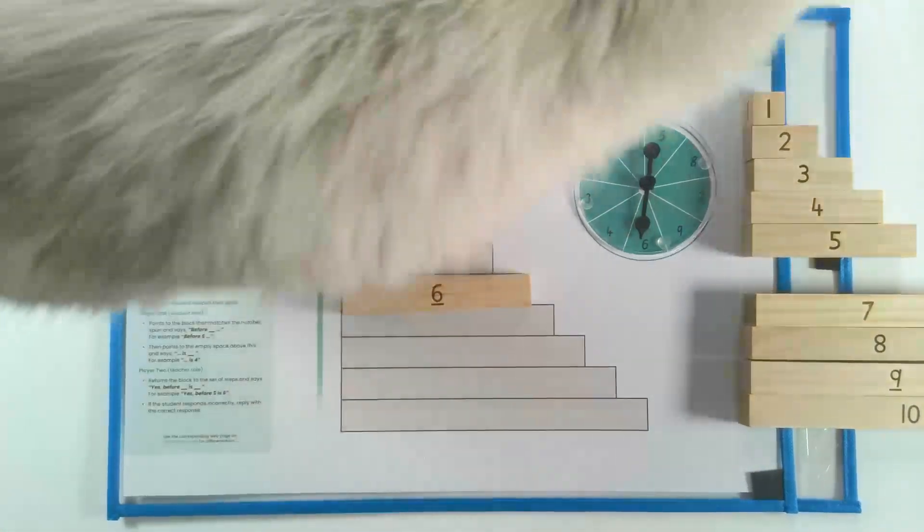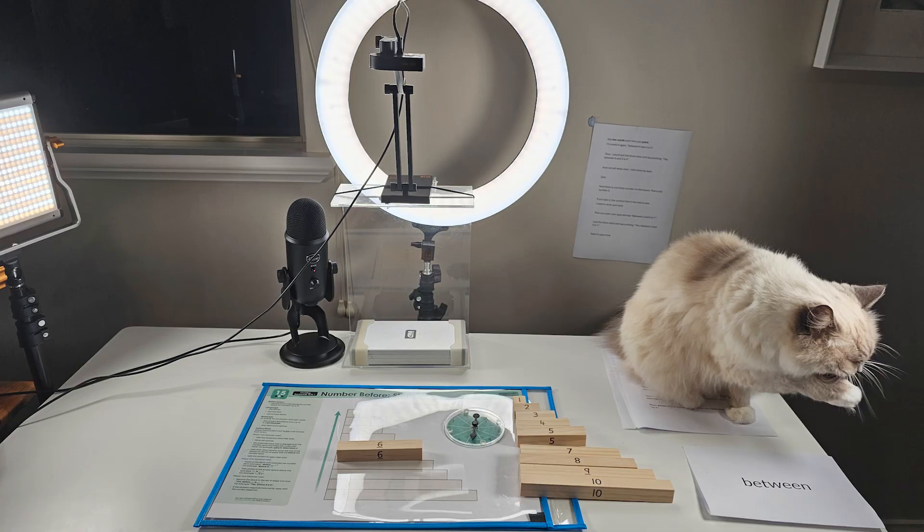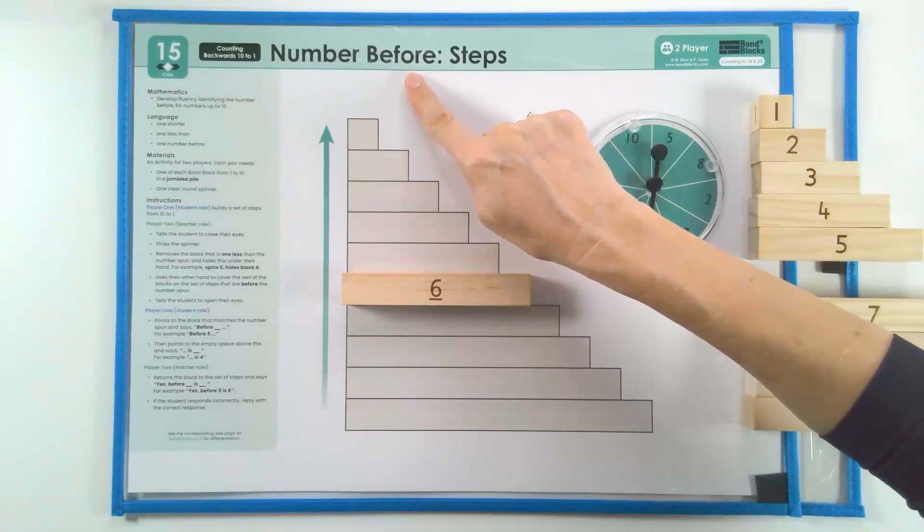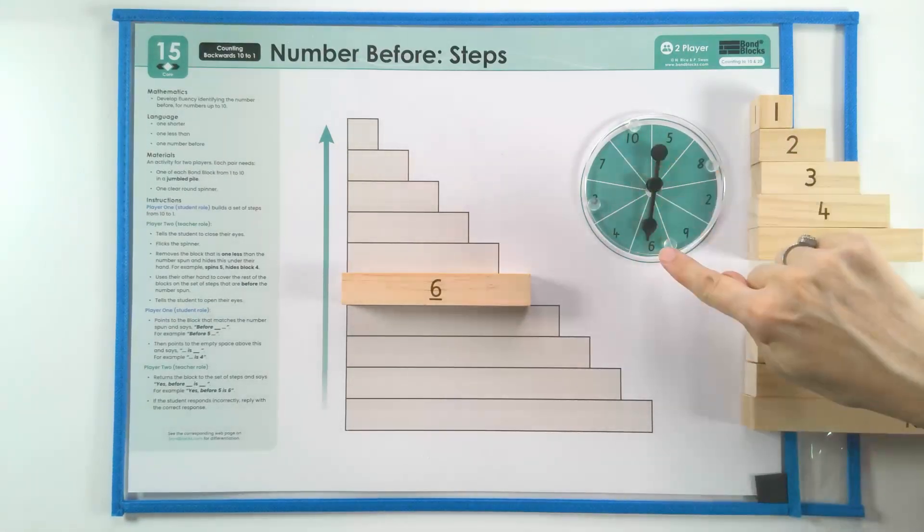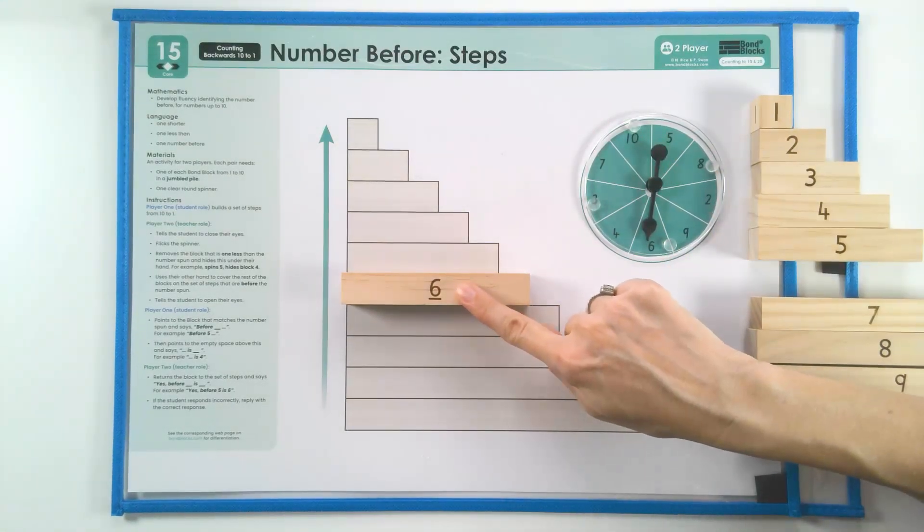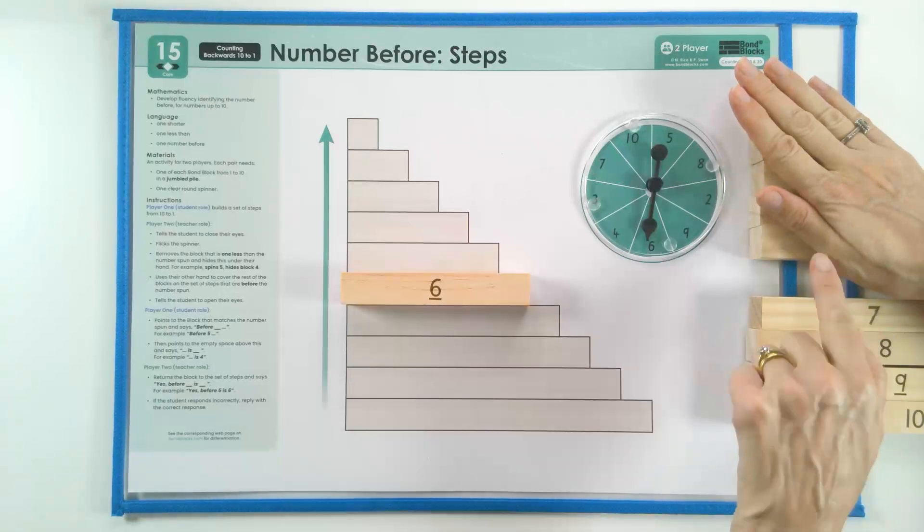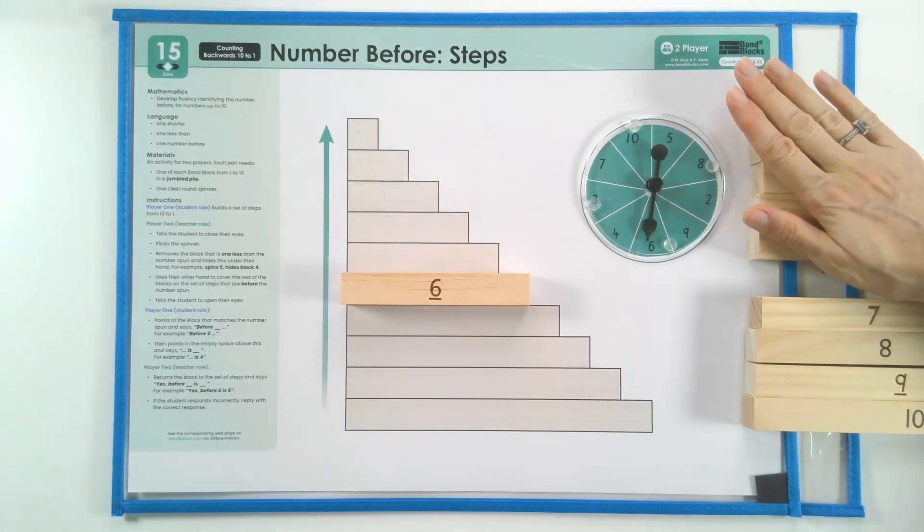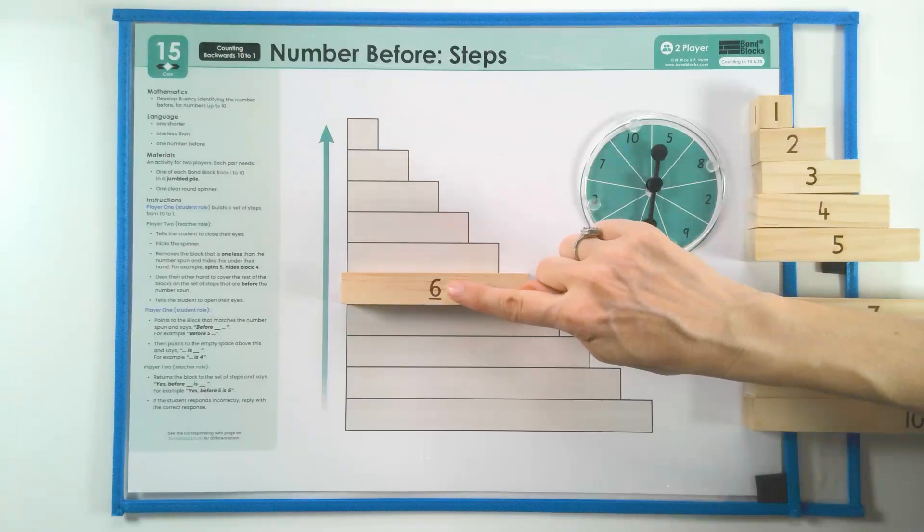Math Cat then sat her bottom here on top of my script. Now that Math Cat has gone, welcome back to activity 15, the number before, a little harder. We flick the spinner and place the block that's spun. I then cover up the number before, and then Karis, you will open your eyes and you will say two words here.